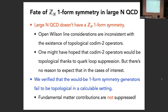To summarize the fate of this one-form symmetry: we gave both general arguments and concrete calculations in a specific example indicating that large N QCD does not have a Z_N one-form symmetry, in the sense that the required topological operators don't exist. On the one hand, we have the non-trivial open Wilson lines, which preclude the existence of exactly topological co-dimension-two operators. Secondly, we gave arguments that quark loops are not suppressed precisely for the operators one would identify as would-be symmetry generators.